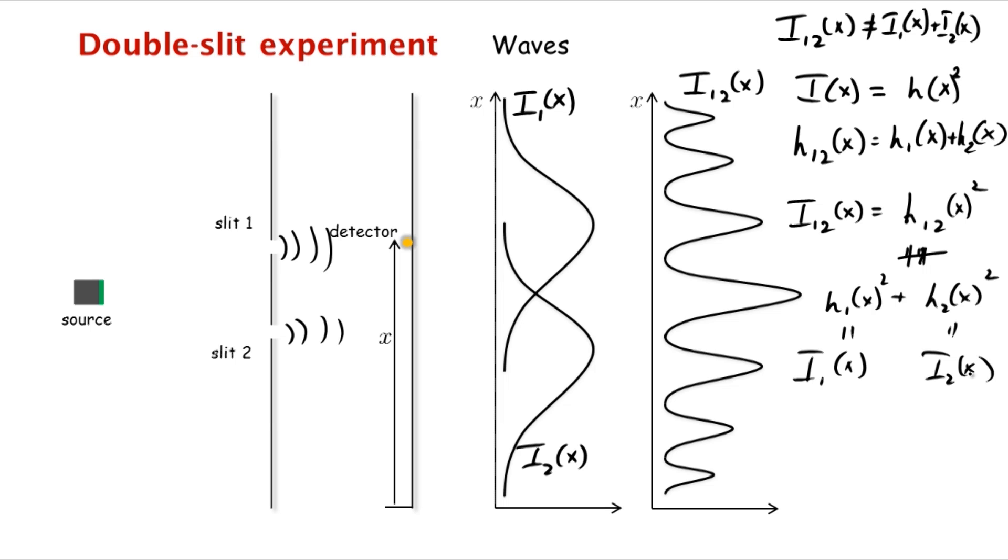So let's try to intuitively now understand this interference pattern. So what happens at this midpoint here? At this midpoint, since it's equidistant from the two slits, what happens is that when a crest of a wave arrives from slit one, the corresponding crest of a wave arrives also from slit two. And so both these crests are trying to move the water up, and the water moves up by the sum of these two crests. And so you get a particularly big wave.